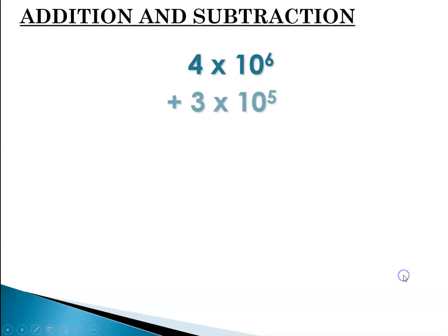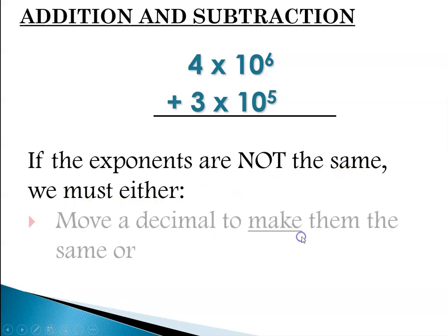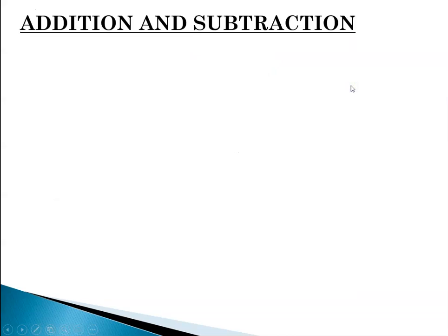But sometimes they're not the same magnitude. So if the exponents are not the same, we must do one of two things. We can either move the decimal to make them the same, or we can convert to standard notation, perform the calculation, and then go back to scientific. I'll show you both.